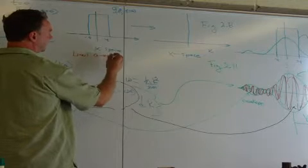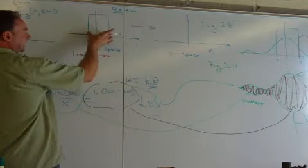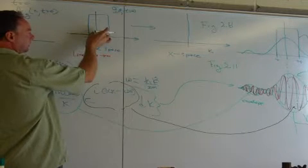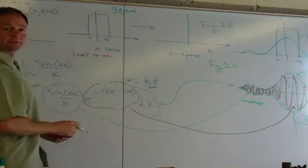A approach zero. So when you let A approach zero, minus A to plus A gets very small, and this becomes very spiky.